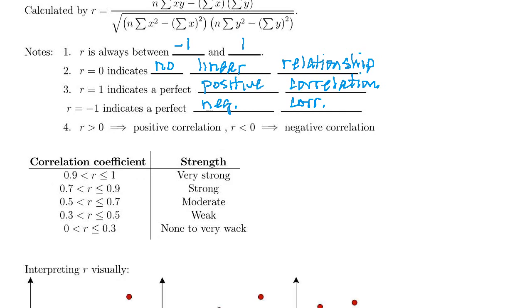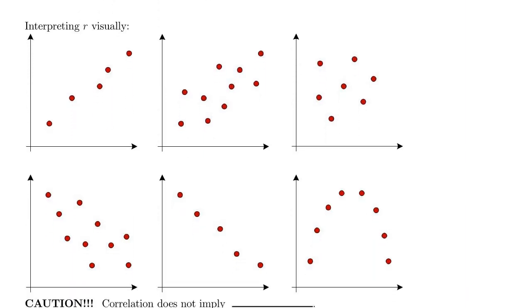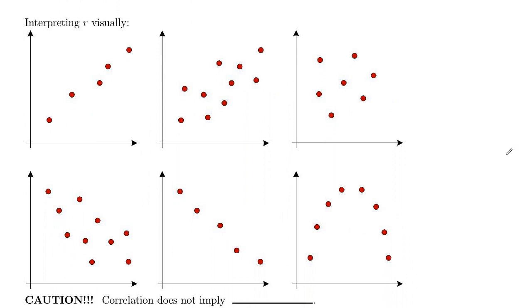So let's look at some pictures to get a visual idea of what the correlation coefficient looks like. So here, we interpret R visually here. These points, they look like they are pretty close to a line that has positive slope. So here, your R is going to be fairly close to 1. So here, R would be approximately 1.